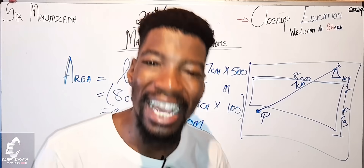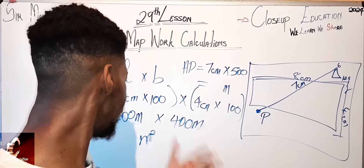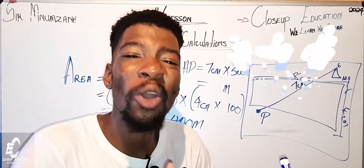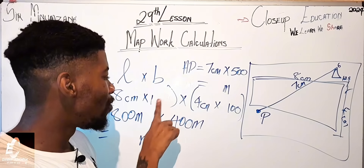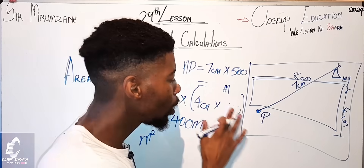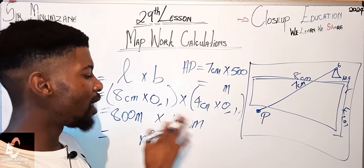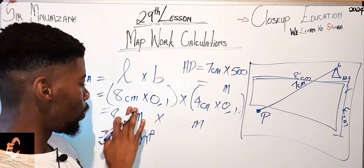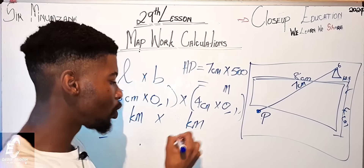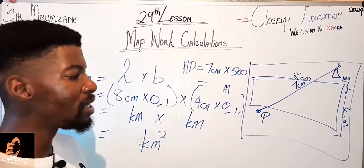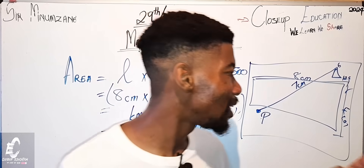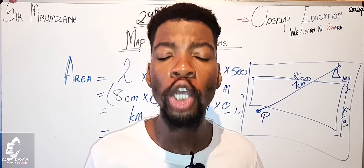If the final answer needs to be in kilometers instead of meters, you convert the centimeters differently. Instead of multiplying by 100, you multiply by 0.1. The answers will then come out in kilometers, and the final unit will be kilometers squared, because you are multiplying two kilometer values together.